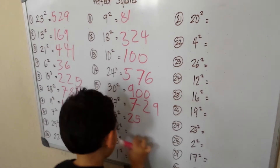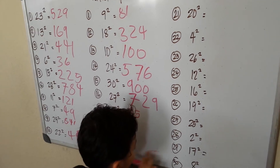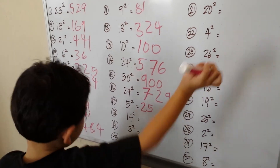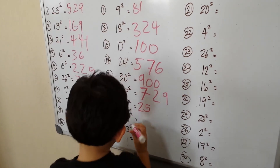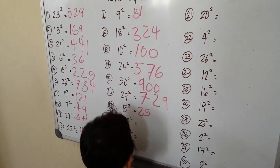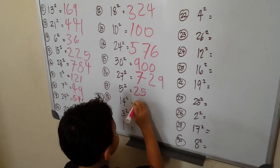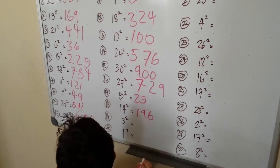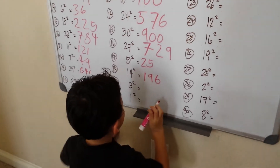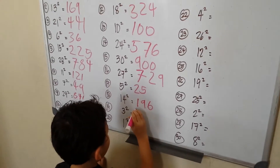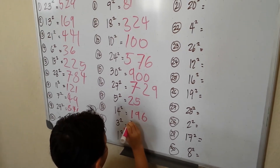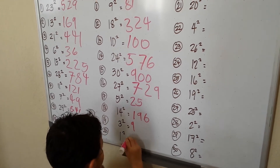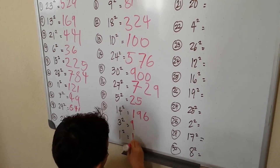14 squared — let me think — 14 squared, it will be 196. Okay, now we've got 3 squared which is 9. 1 squared — 1 times 1 is 1.